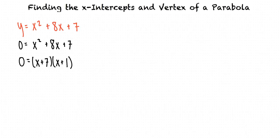Now we can set each factor equal to 0, and when we solve for x, we get x equals negative 7 or x equals negative 1. So the two x-intercepts for this parabola are negative 7 and negative 1.